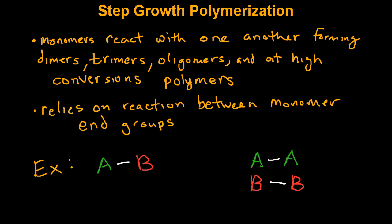Step growth polymerization relies on reactions between monomer end groups. For example, you can have a system with just one monomer with both reactive groups, or you can have a system with two difunctional monomers.